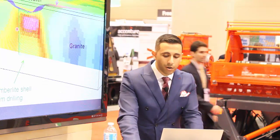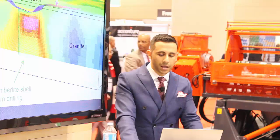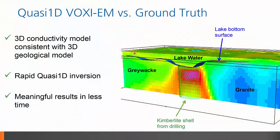For this example, we are fortunate to have other data to compare against. We see a composite of the 3D conductivity model together with a kimberlite shell derived from drilling, as well as the lake bottom from bathymetry. Voxi EM has accurately located the top of the kimberlite, correctly placing it underneath the lake bottom — a good validation of the depth resolution provided by Voxi EM. As expected from a 1D inversion, the vertical orientation of this conductive target results in some predictable artifacts flanking the main conductor.